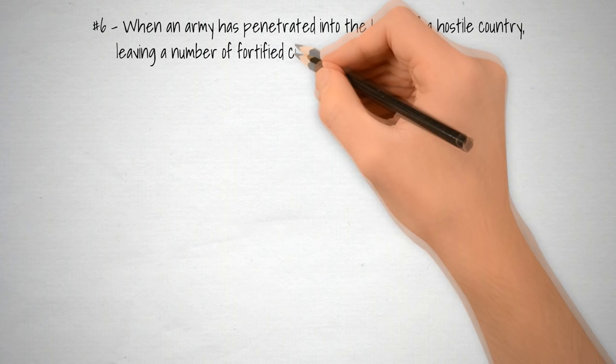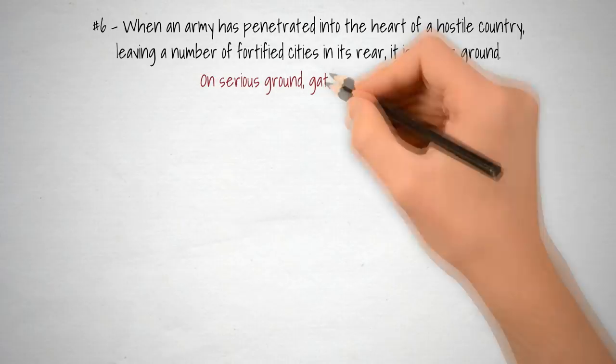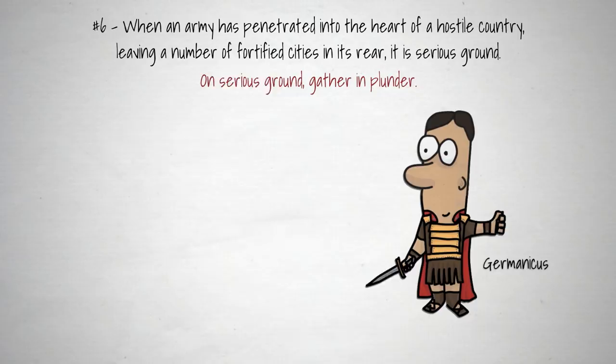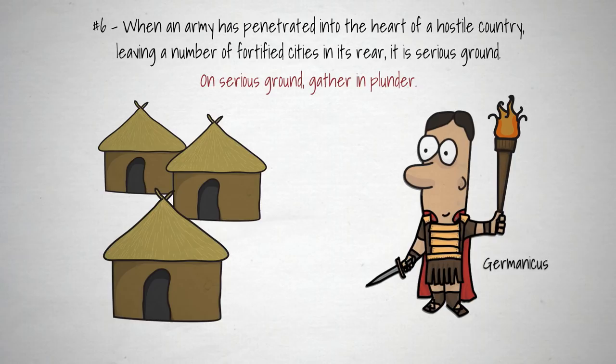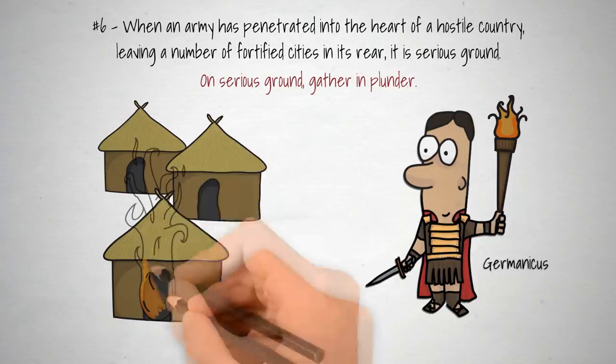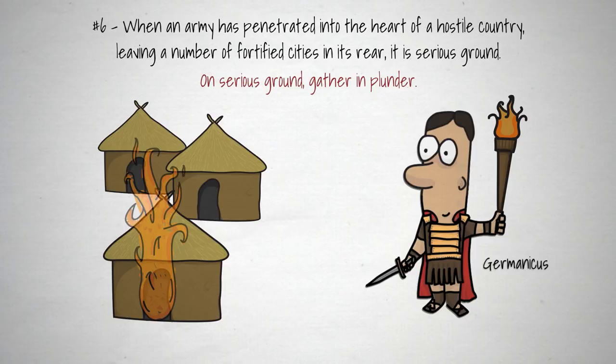Germanicus went on a punitive expedition to attack the Germanic tribes that had previously destroyed several Roman legions in battle. His intention was to terrorise the enemy by pillaging and burning deep in their territory. Rather than leading to a battle and confrontation, these raids were designed to strike fear into the opponents by highlighting the consequences of acting against the Roman Empire. The speed and destructiveness of the raids maximised the psychological impact by exposing how vulnerable the enemy was.